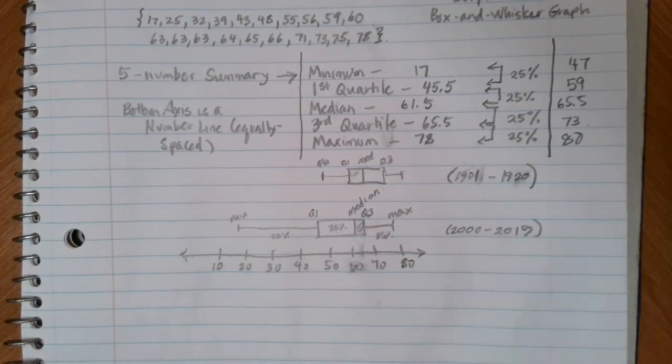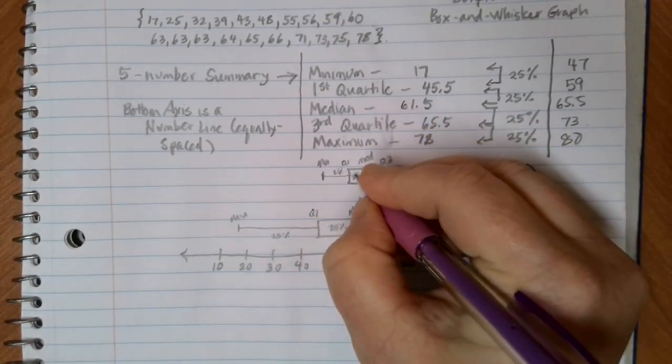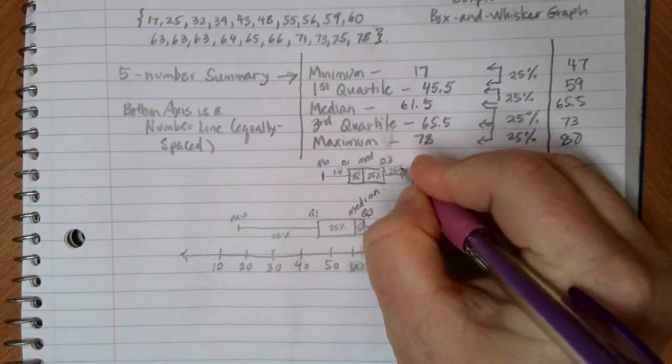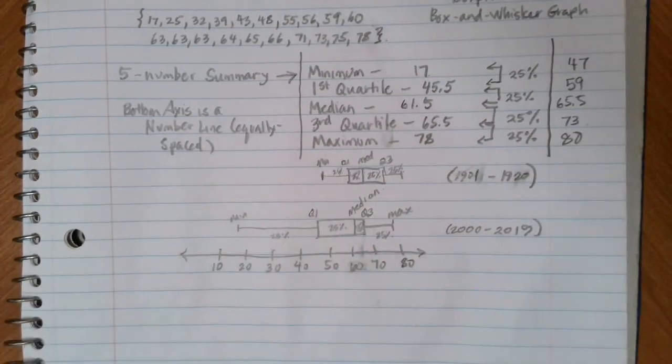So here I have 25% of the data in this bottom whisker, 25% here, 25% here, and then 25% of the data points between here and here. I don't have the exact numbers that lie in the five-number summary, but it gives us an idea of how spread out the data is.